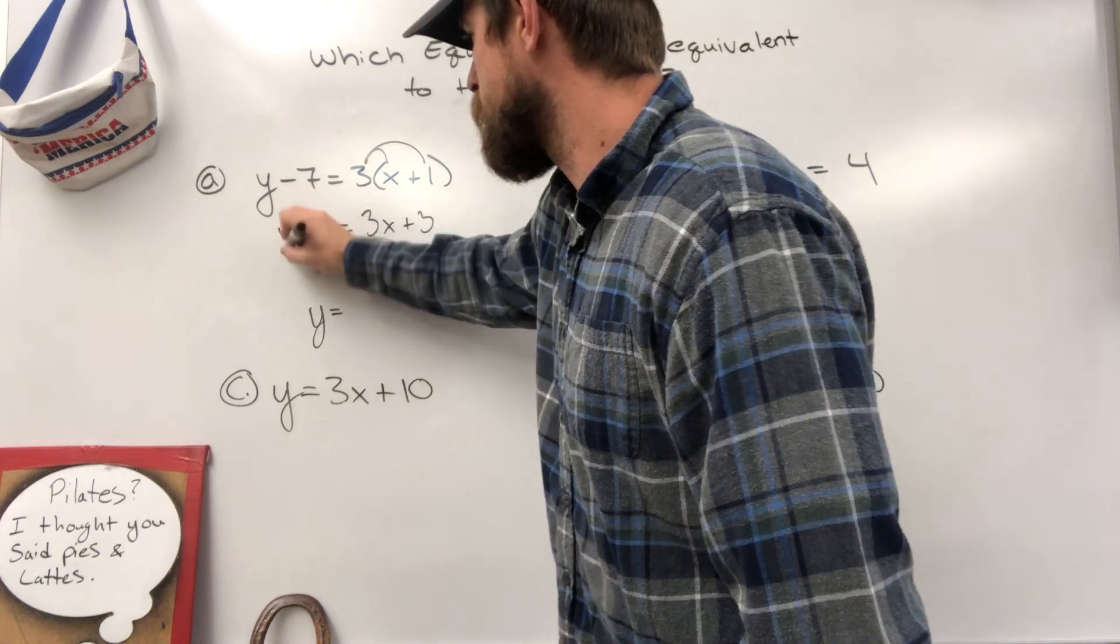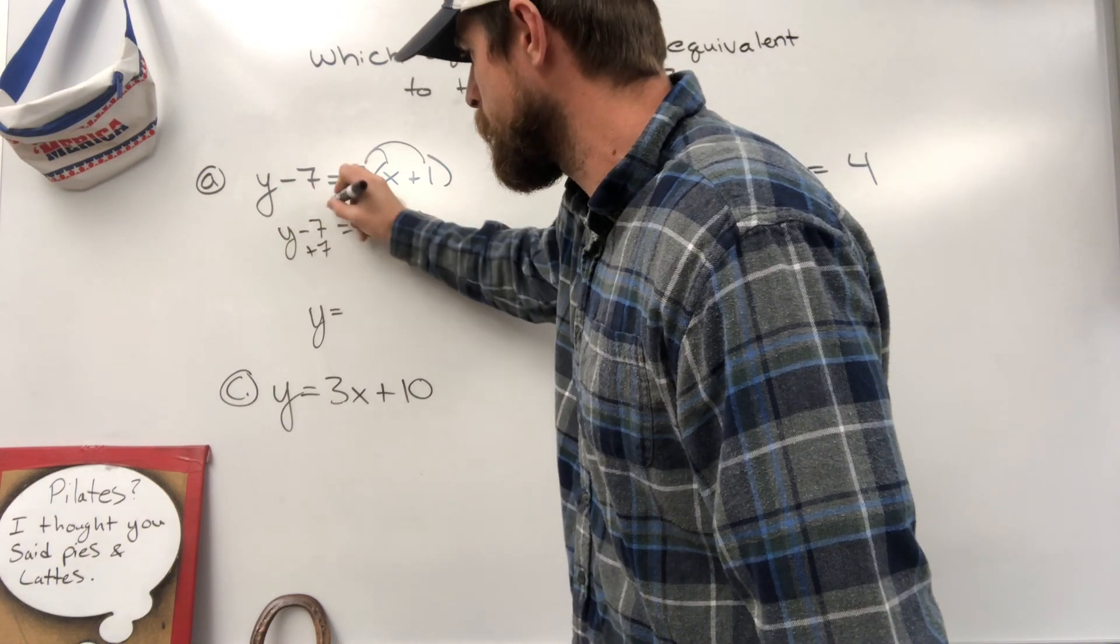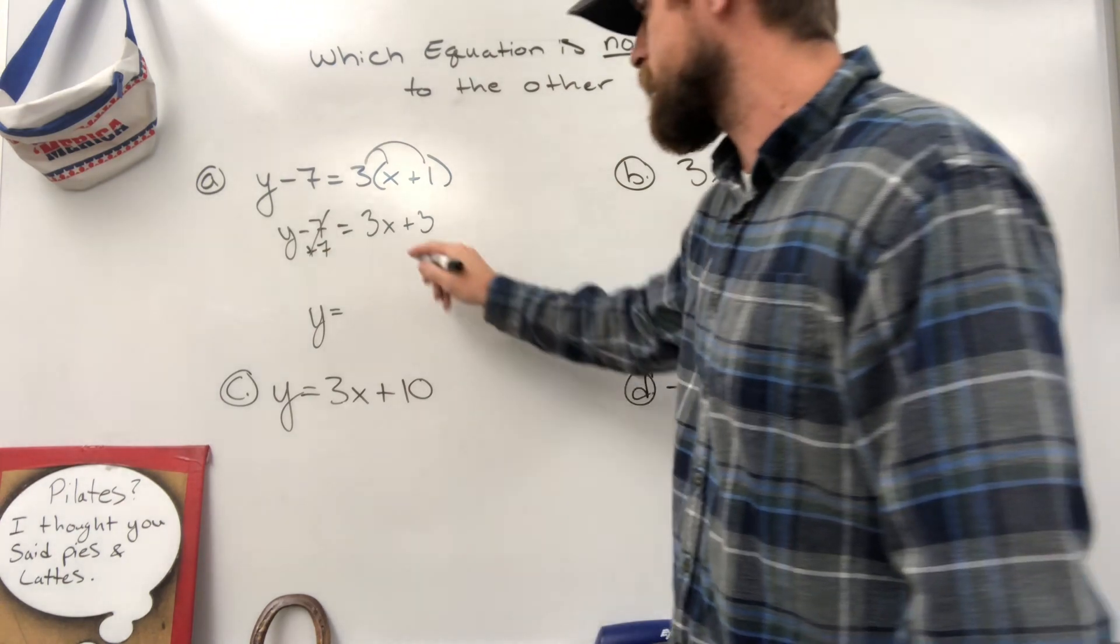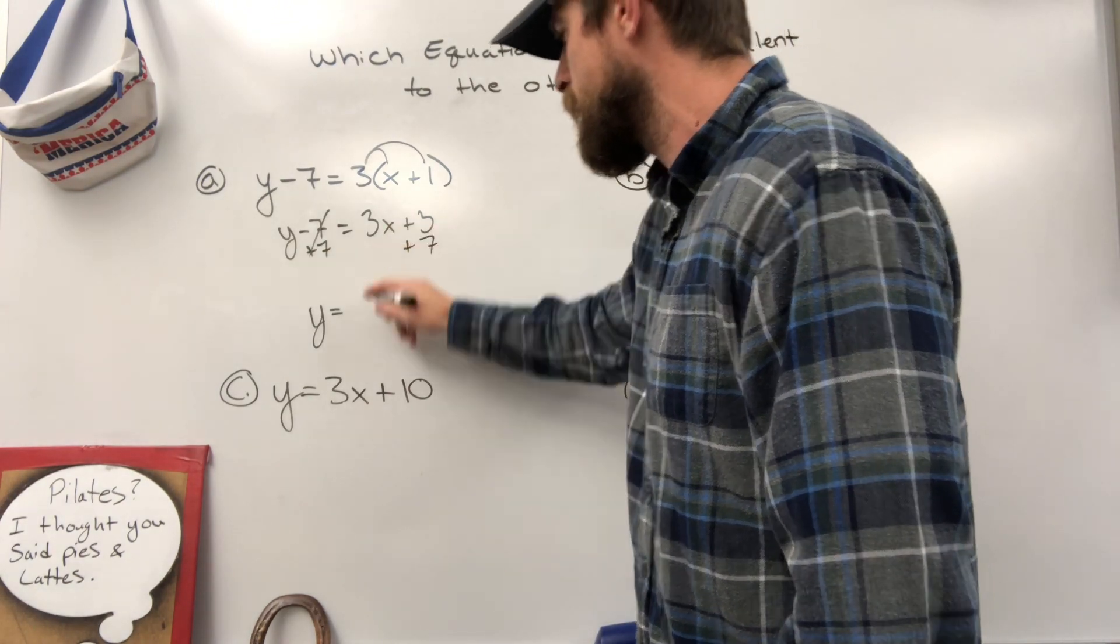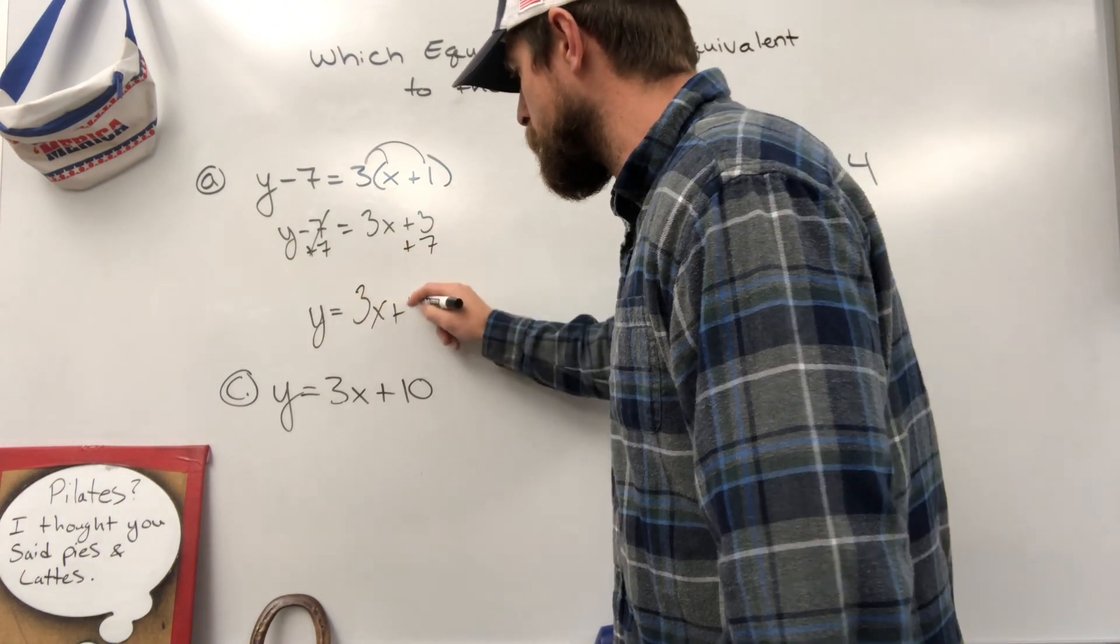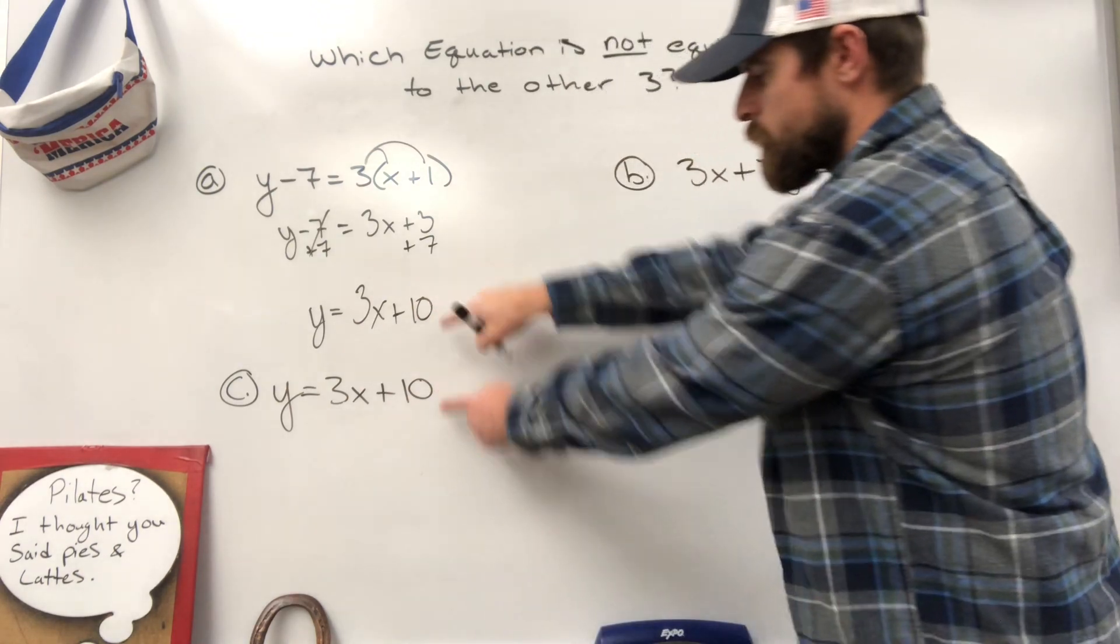Then we need to use inverse operations by adding 7. That would cancel out that term on the left side, add 7 to the right side, and by golly, we end up with 3x plus 10. Notice that we have a match.